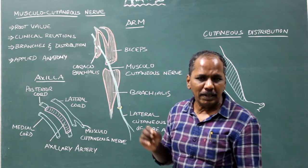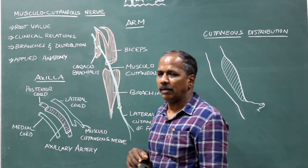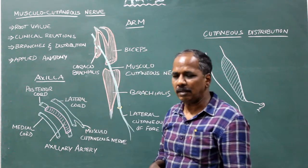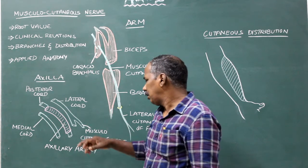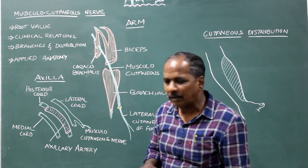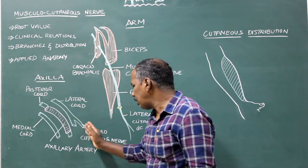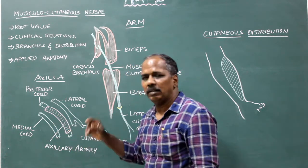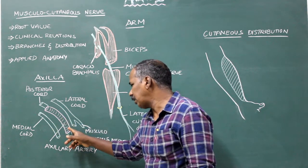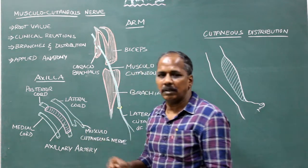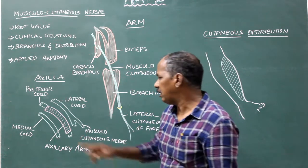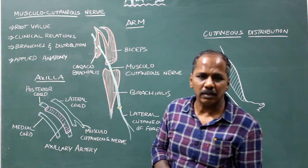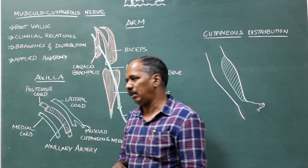Important clinical relations. In the axilla, the musculocutaneous nerve lies lateral to the third part of the axillary artery. It arises from the lateral cord and lies lateral to the third part of the axillary artery.